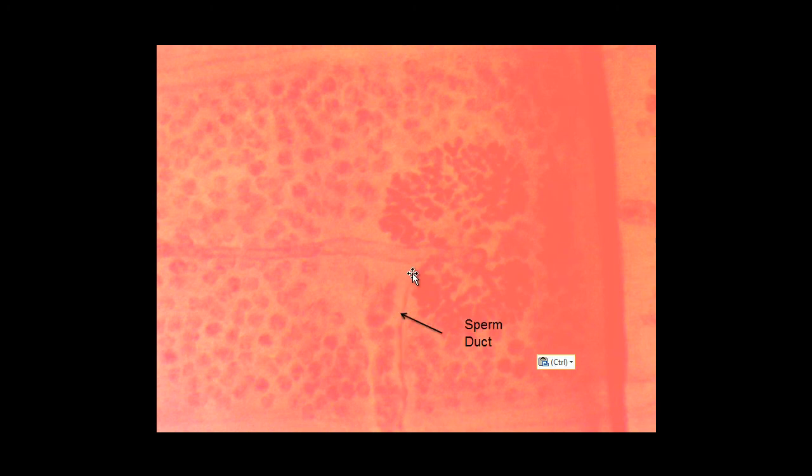These are the testes, which provide sperm to fertilize the ovum. This long structure here is the uterus, where eggs are stored. This is the yolk gland, which provides yolk or nutrients for the developing embryos. This long thin tube is the sperm duct, where sperm is concentrated to fertilize the ovum and manufacture embryos or fertilized eggs.